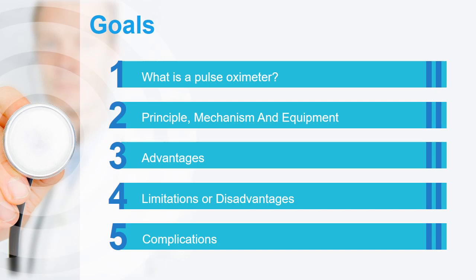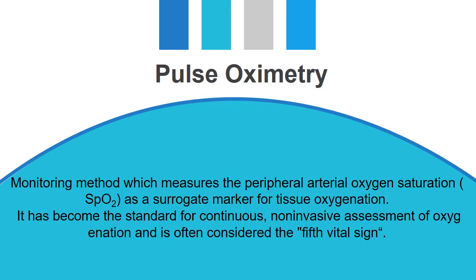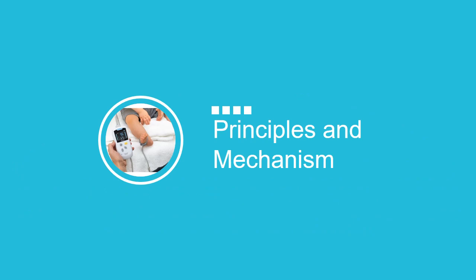Let's start the discussion. A pulse oximeter is a monitoring device that measures the peripheral arterial oxygen saturation as a surrogate marker for tissue oxygenation. It has become the standard for continuous non-invasive assessment of oxygenation and is often considered the fifth vital sign. Basically, the pulse oximeter is a surrogate measure of SaO2 — the arterial saturation of hemoglobin — and because it uses arterial blood with pulsatile flow, it is also called SpO2.